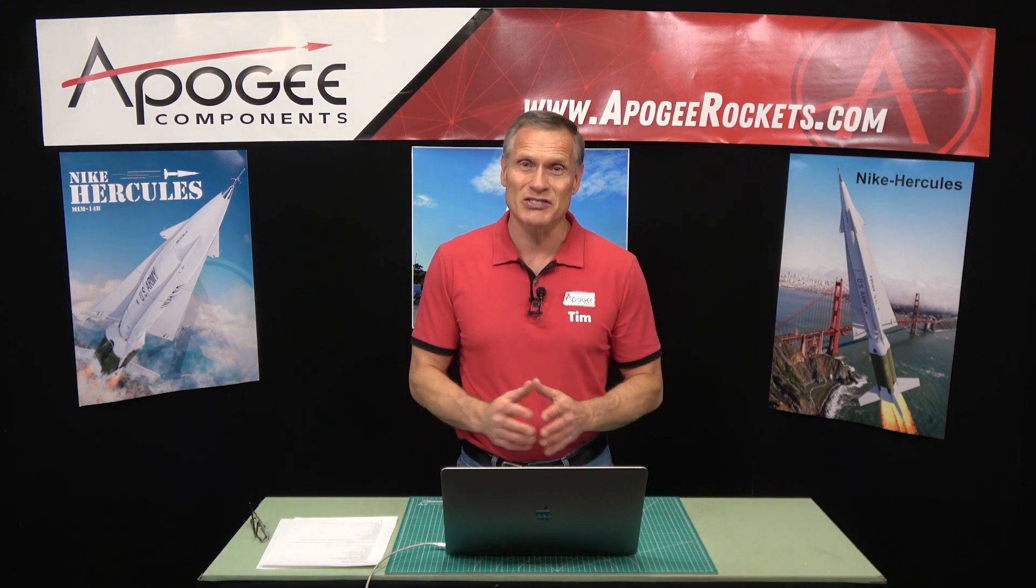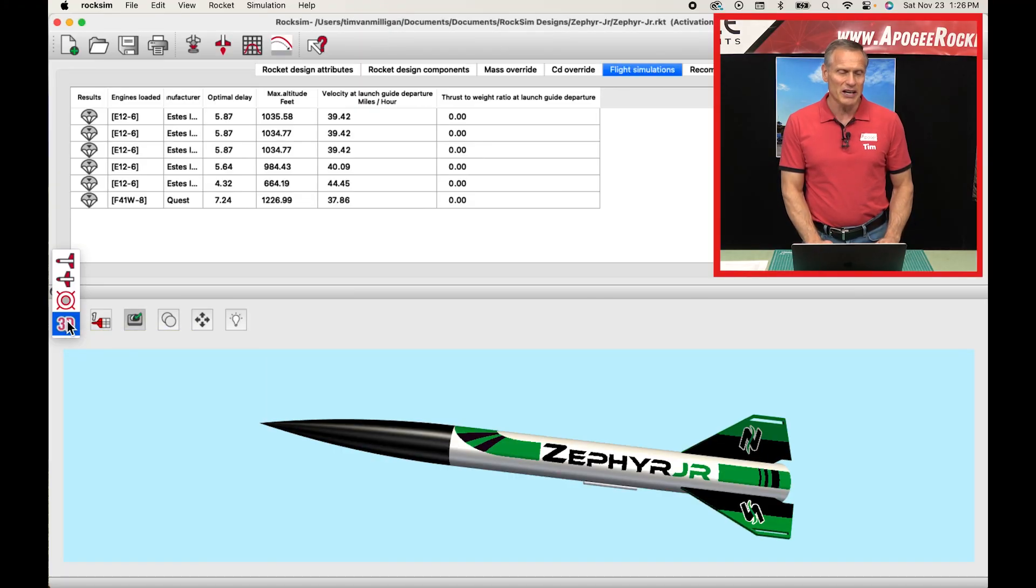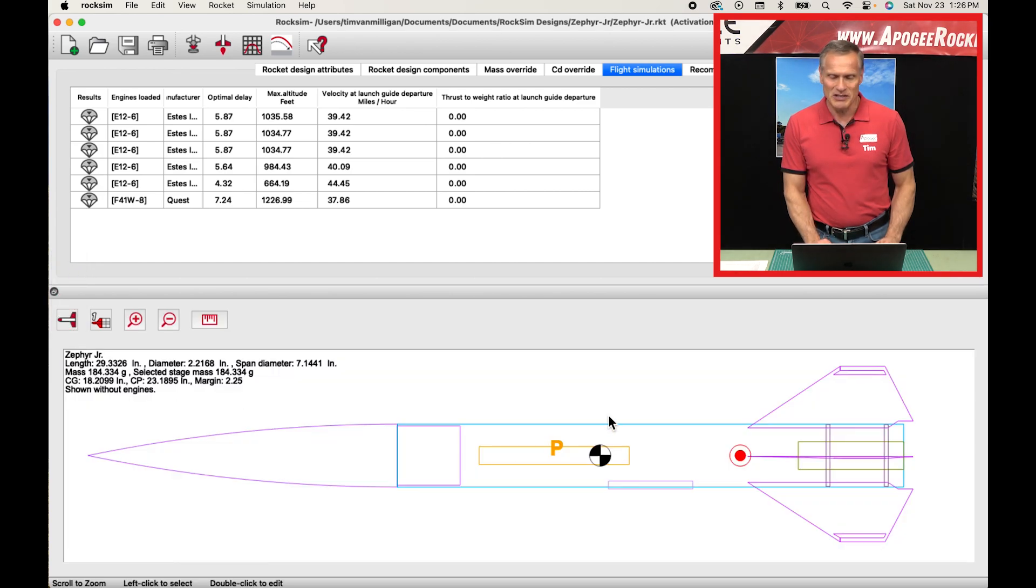One of the first things that you're going to do when you get the software is you want to figure out where the rocket is going to balance. So is it going to be stable when you fly it? And for that we're going to go into the software and we're going to look at the 2D side view of the rocket which is this little button way over here and this is going to tell us the center of gravity location and the center of pressure. The center of pressure has to be further back. That's where all the aerodynamic forces are centered and the center of gravity has to be in front of that.